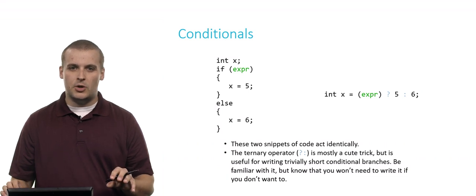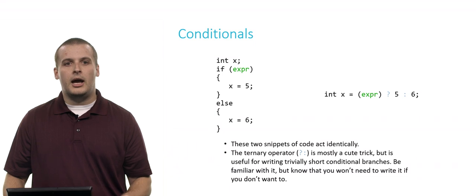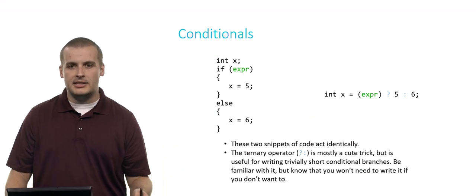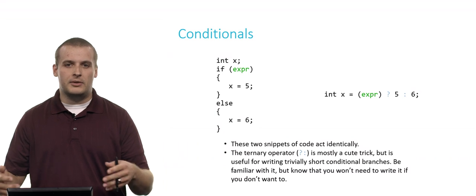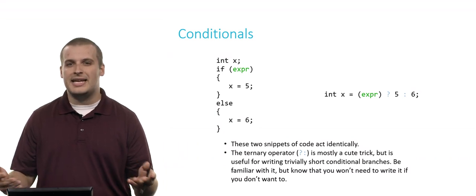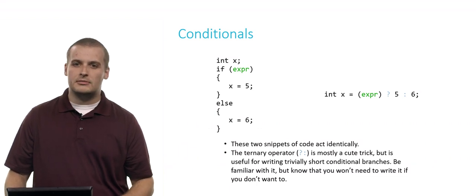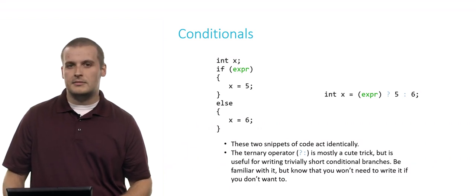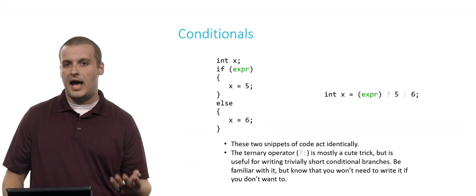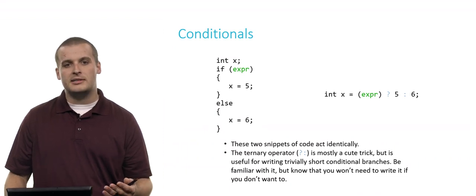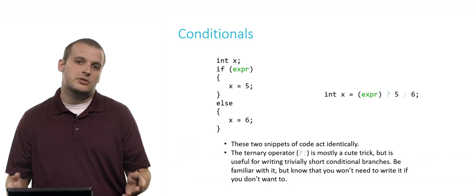So I have two snippets of C code here, one on the left and one on the right. The one on the left should probably be pretty familiar to you. I have int x. And I probably should have asked the user for it. It should probably be int x equals get int or something like that. And then I'm making a decision. If some Boolean expression is true, assign x the value 5. Otherwise, assign x the value 6. That on the left should probably be pretty familiar from our discussion of if else just a moment ago.